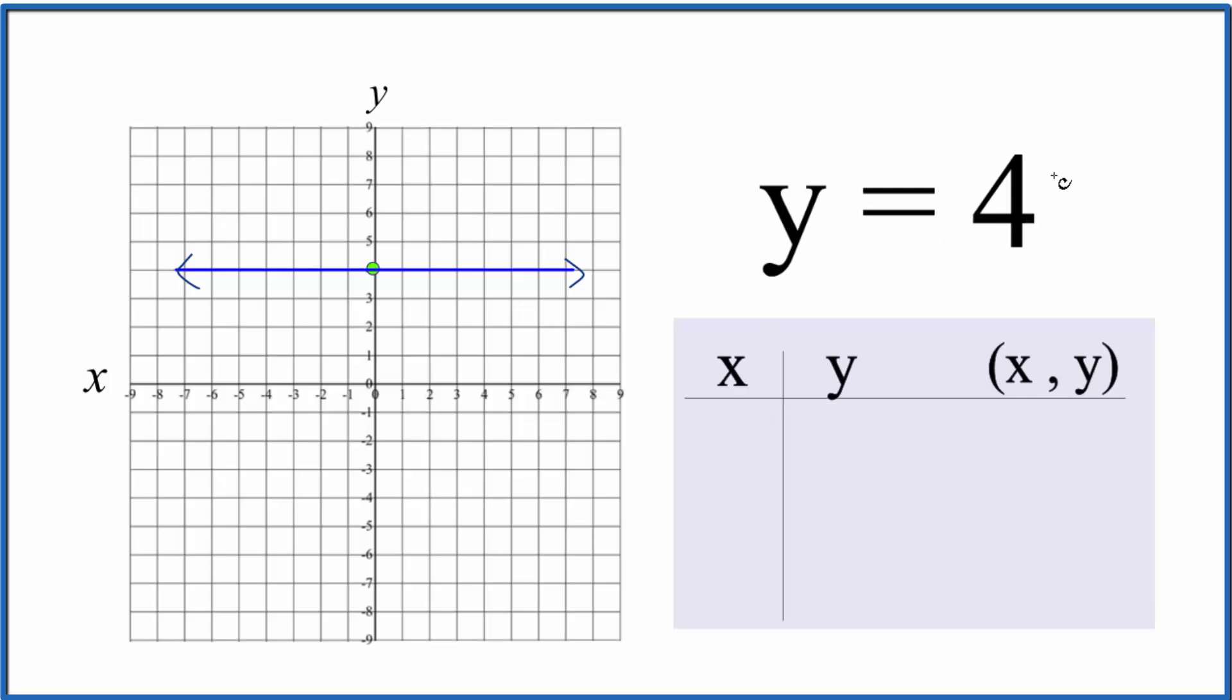We said y is going to be 4, so for any value of x, y is 4. So if x is 3, y would be 4. If x is 1, y would be 4. And if x is negative 5, y would be 4. So these points will all be on the line for the equation of y equals 4.